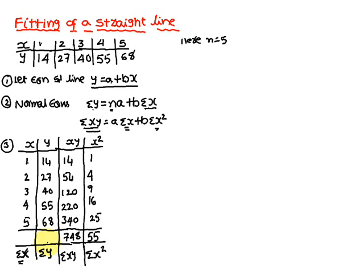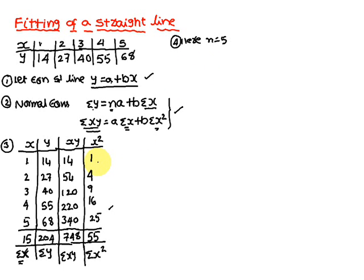The summation of the y column is 204, and the summation of the x column is 15. Now substituting the table values into the normal equations — the value of n is equal to 5.